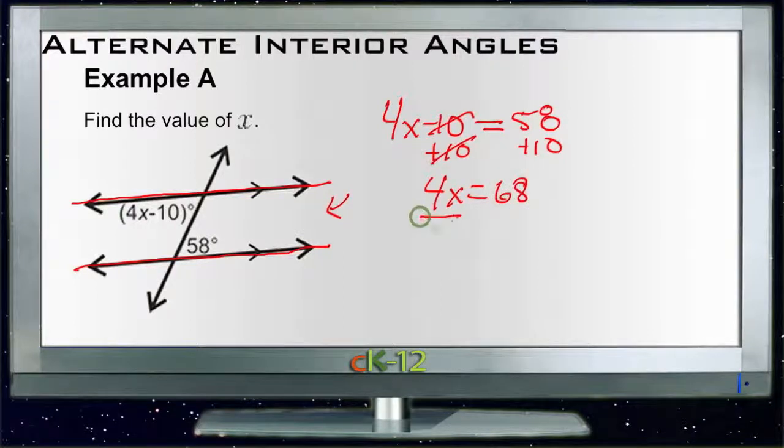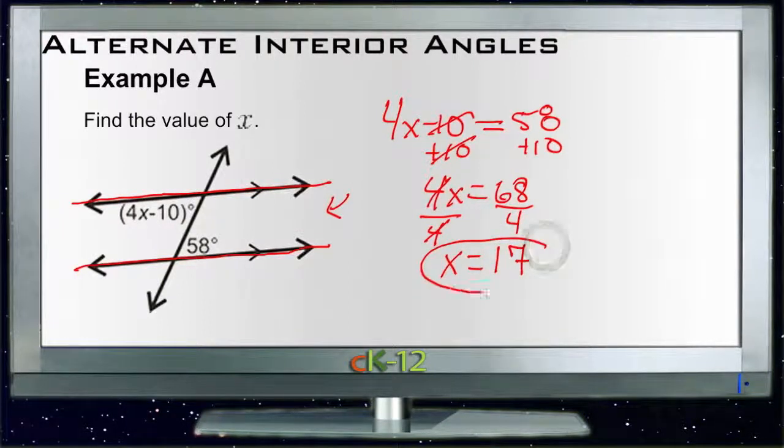And then we'll divide by 4. 4 divided by 4 is 1, that leaves us with just 1x, which is what we wanted. And 68 divided by 4 - well, 68 divided by 2 would be 34, and 34 divided by 2 would be 17. So x would be 17.